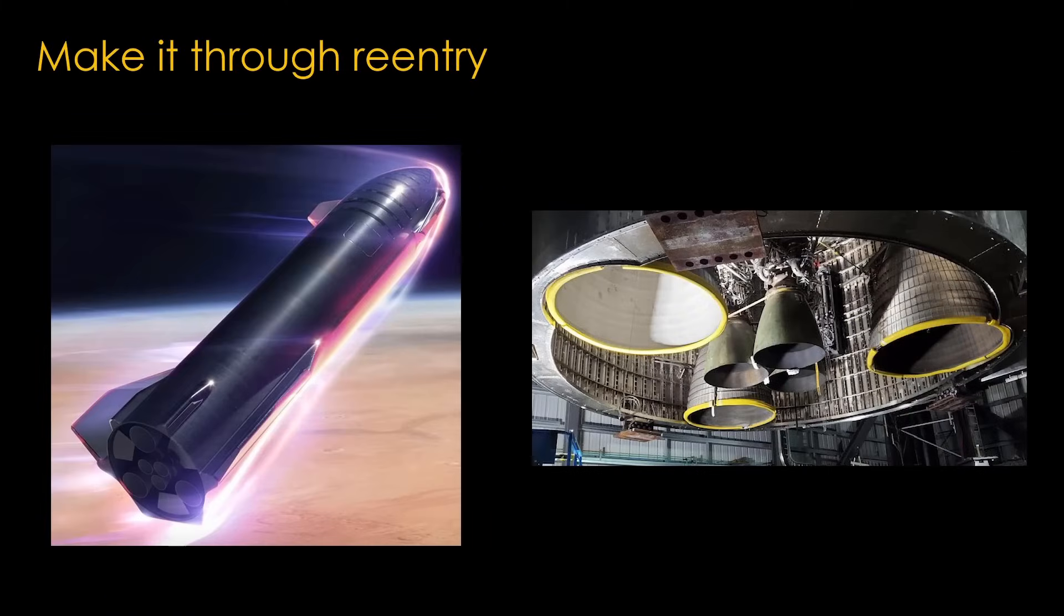The second issue with reusability is being able to make it through reentry. Starship comes in mostly sideways, and that allows them to tuck the engines into the rear part of the stage and protect them from reentry heat with the same tiles that protect the rest of the ship. It adds weight, but allows them to use engines with bell nozzles.